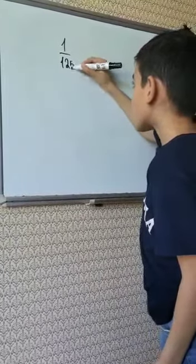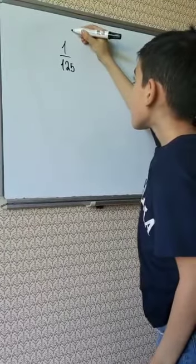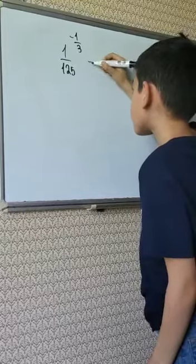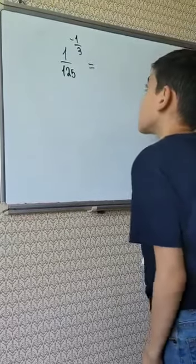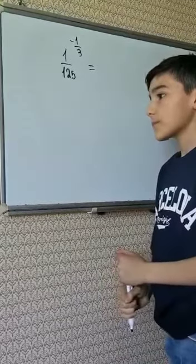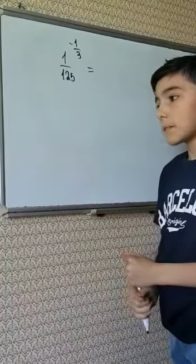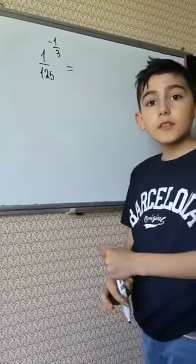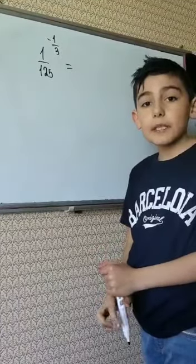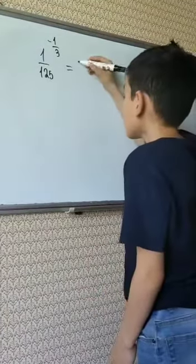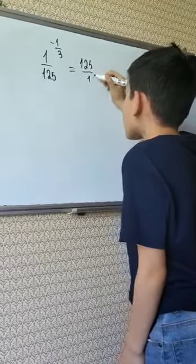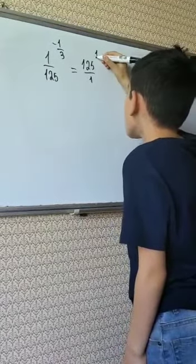For example, 1/125 to the power of negative 1/3. When you change negative power to positive, you need to swap the numerator and denominator. So, you get 125/1 to the power of 1/3.